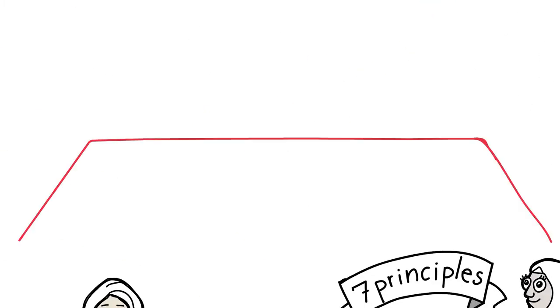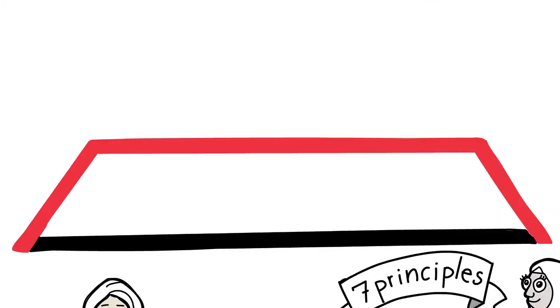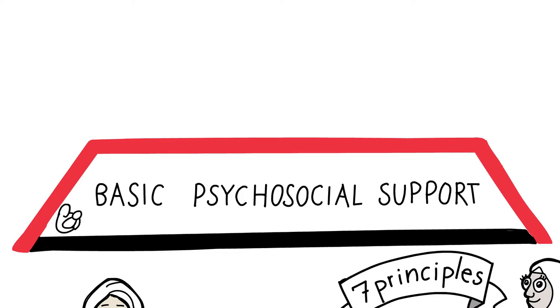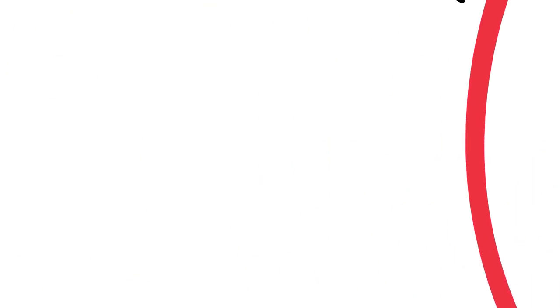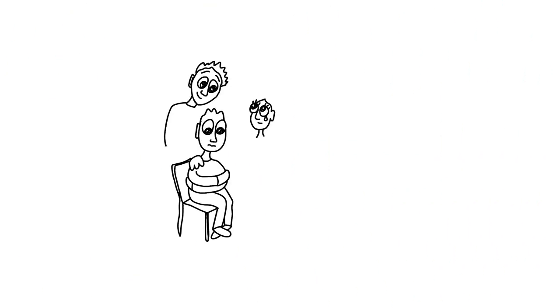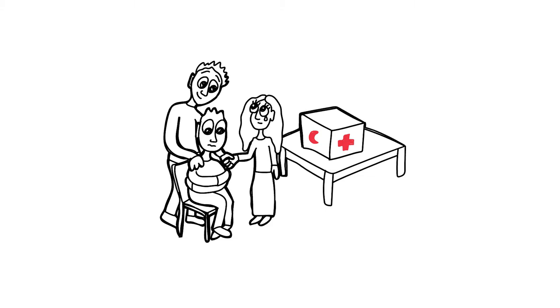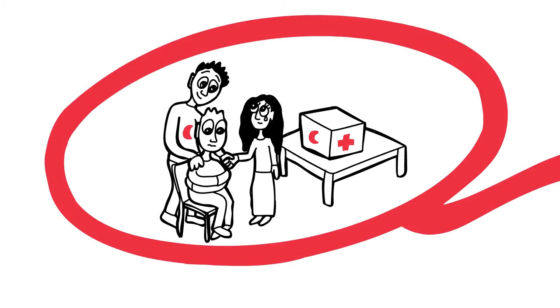The first layer of the pyramid in the framework is the basic psychosocial support layer. Activities in this layer are often better integrated into health, protection, nutrition, and education programs, and the support should be accessible to 100% of the affected population. The support could also be psychological first aid or other basic emotional support that is normally done by trained Red Cross Red Crescent staff and volunteers or community members.